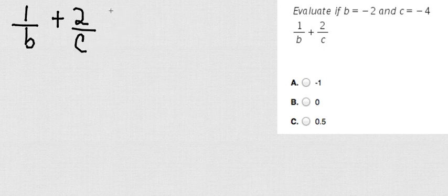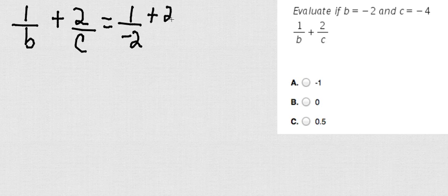So let's do it. Now remember, b equals negative 2, so I'm going to go ahead and substitute: 1 over negative 2 plus 2 over negative 4.